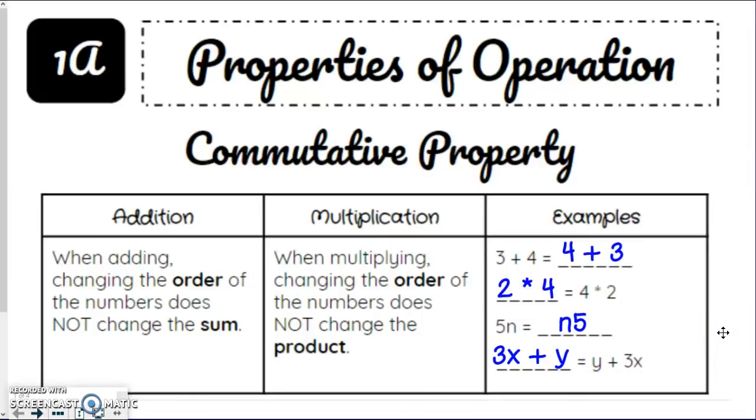So notice, all we're doing is changing the order. We're just flipping it around, and it means the exact same thing. That's called the commutative property. That's why I bolded order, because that's the thing. The order does not matter. You'll still get the same answer.